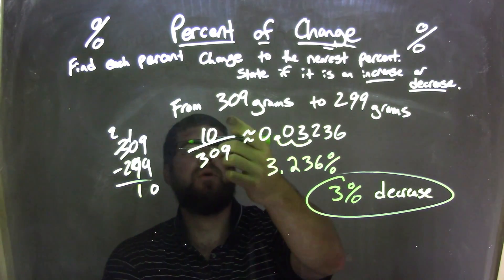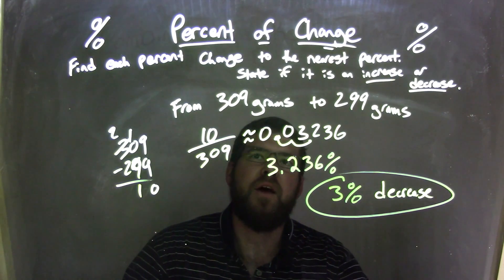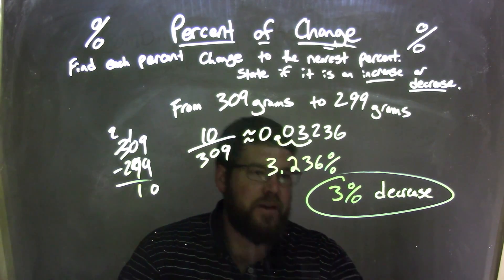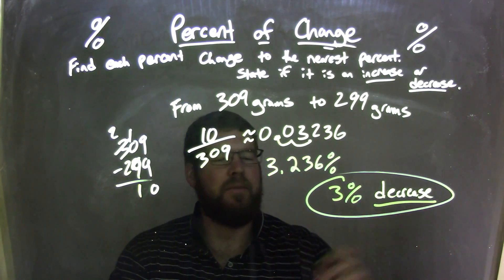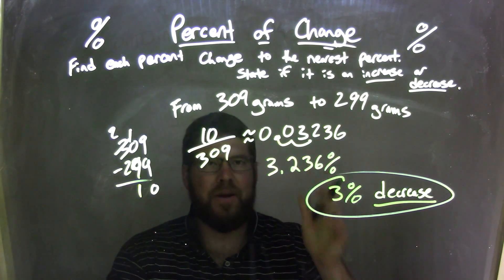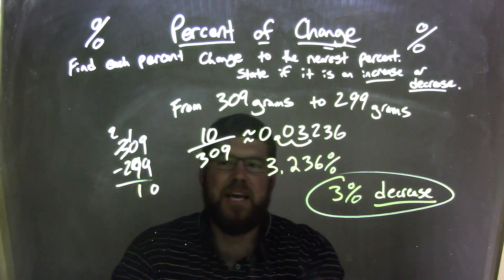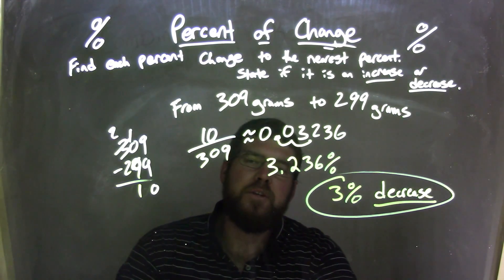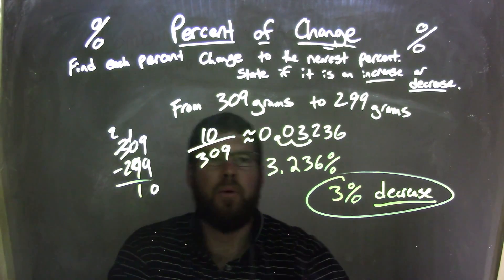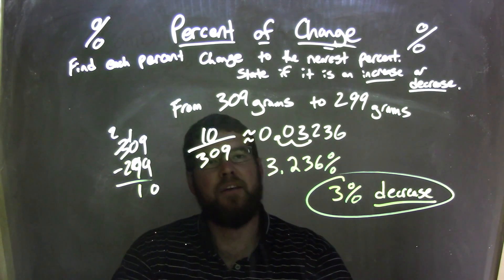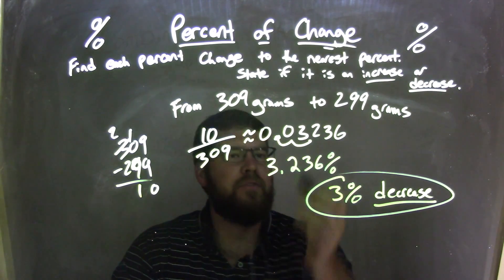So let's recap here. We started with 309 grams to 299 grams, and so we knew that was a decrease, we stated it right there. I always like to write it out so I won't forget later. We then found the difference between the two numbers, the difference came out to be 10. We took that 10 and divided by our first number, 309, to get an approximate decimal of 0.03236.